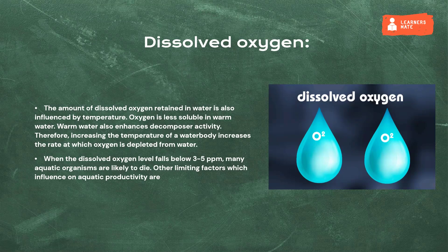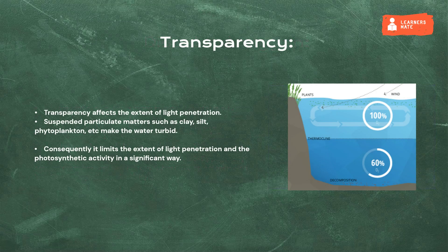Other limiting factors which influence aquatic productivity include transparency. Transparency affects the extent of light penetration. Suspended particulate matters such as clay, silt, phytoplankton, etc. make the water turbid. Consequently, it limits the extent of light penetration and the photosynthetic activity in a significant way.